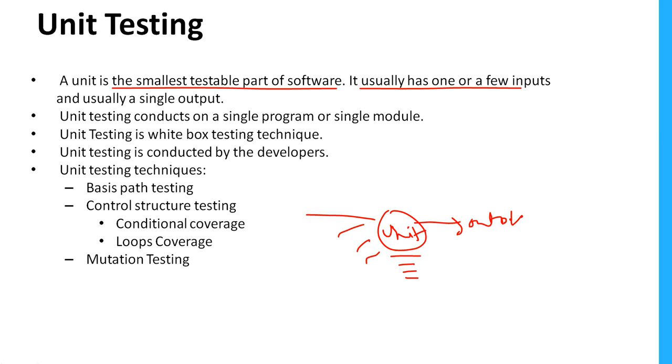This can be a small program or small component designed by the developer. Unit testing is testing a small component or small program. This is a white box testing technique because internally the developer will test this logic directly. Unit testing is always conducted on a single program or single module.